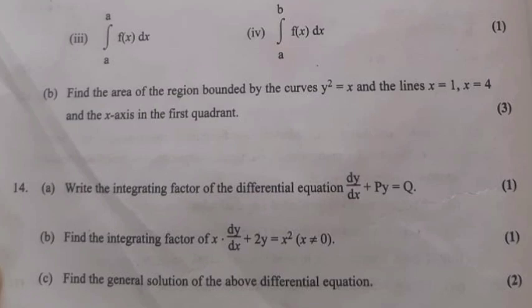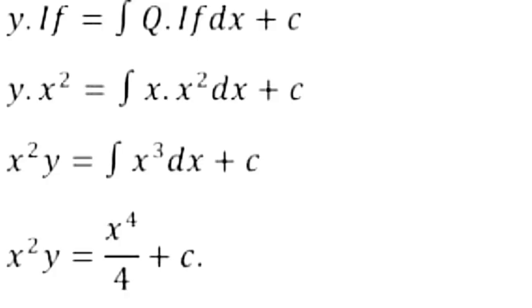Question 14C: Find the general solution of the above differential equation. Answer: y·(IF) = ∫Q·(IF) dx + c. So y·x² = ∫x·x² dx + c = ∫x³ dx + c. Therefore x²y = x⁴/4 + c.